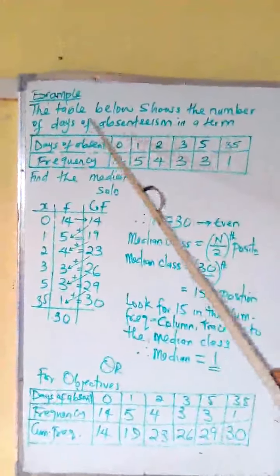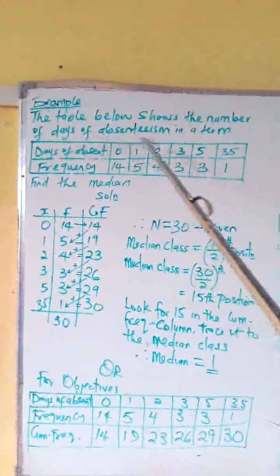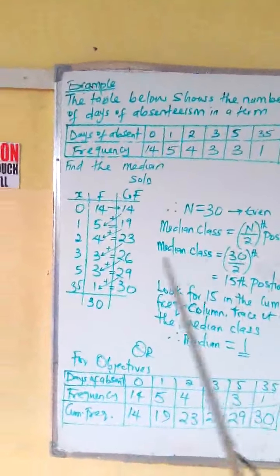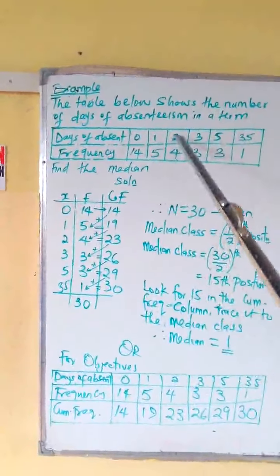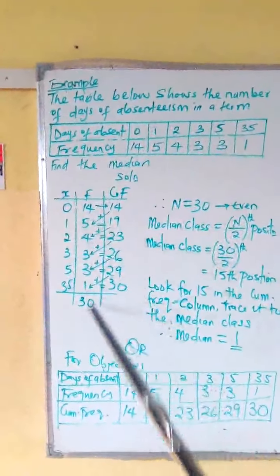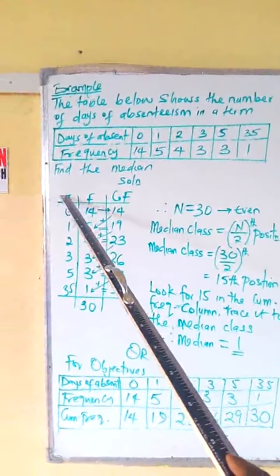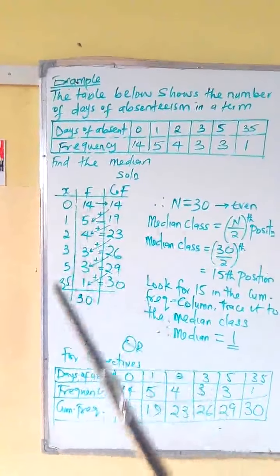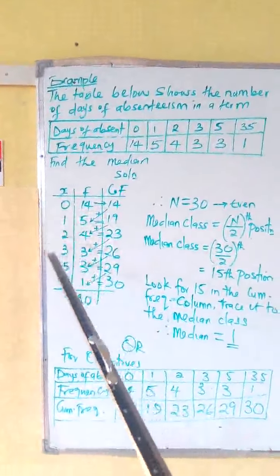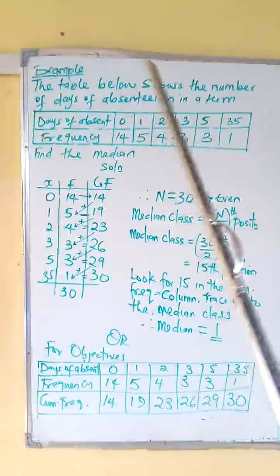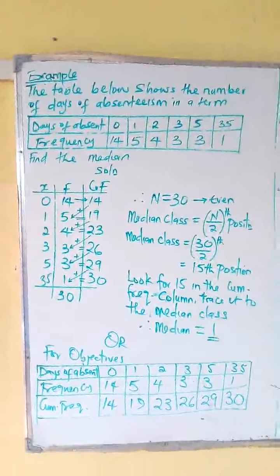Now, let us look at the example below. The table below shows the number of days of absenteeism in a term. Find the median. Now, for us to find the median, you put this value in a table. Days of absenteeism is represented as X, which is our class: 0, 1, 2, 3, 5, and 35. Now, your frequency is this. Now, for us to get the median,